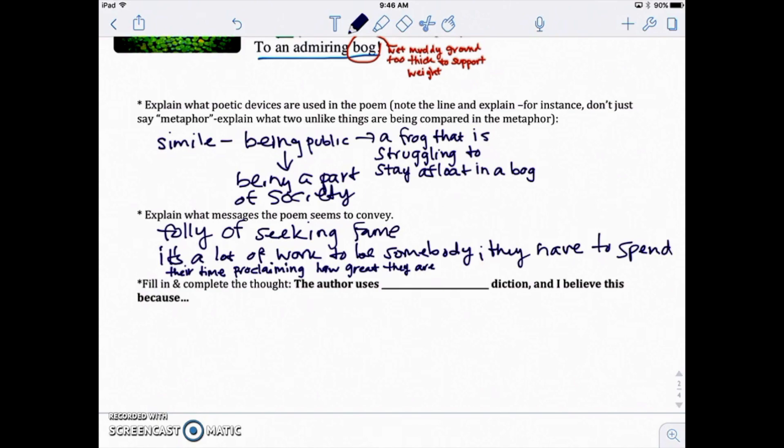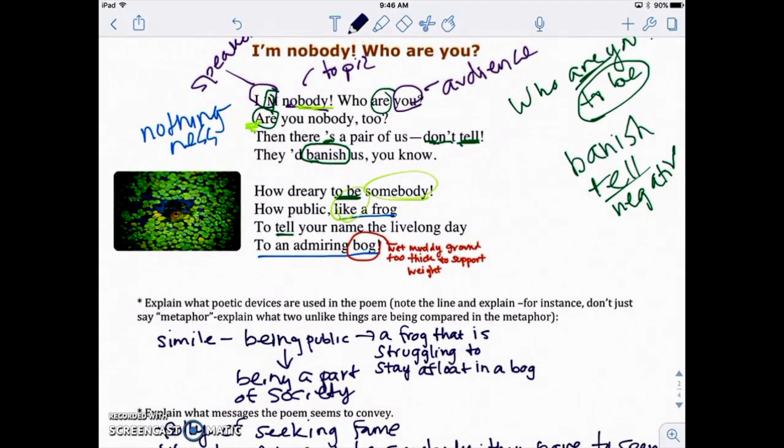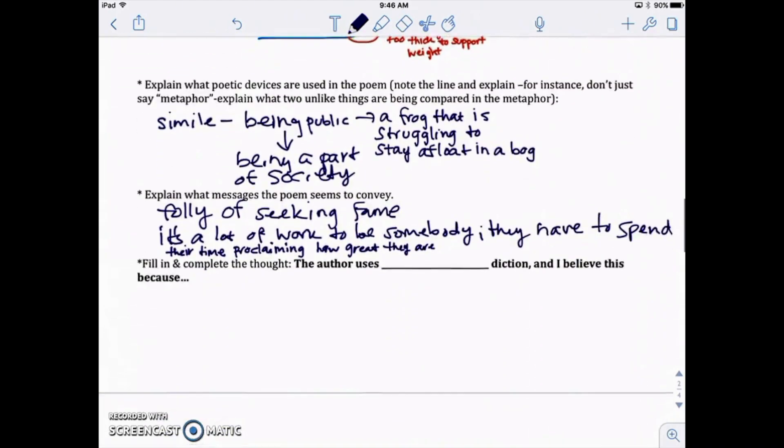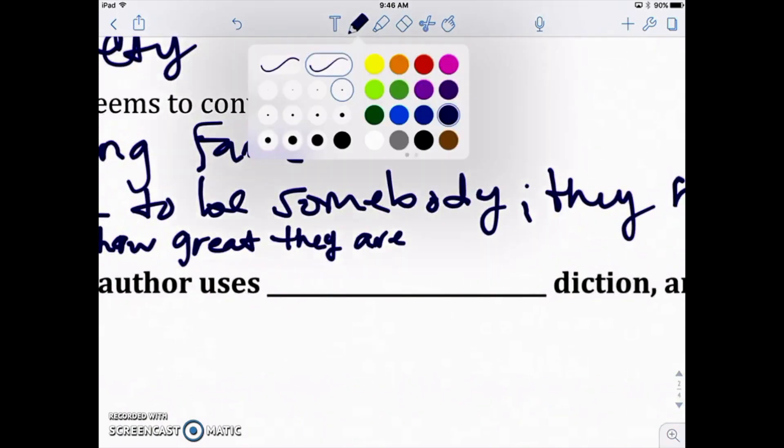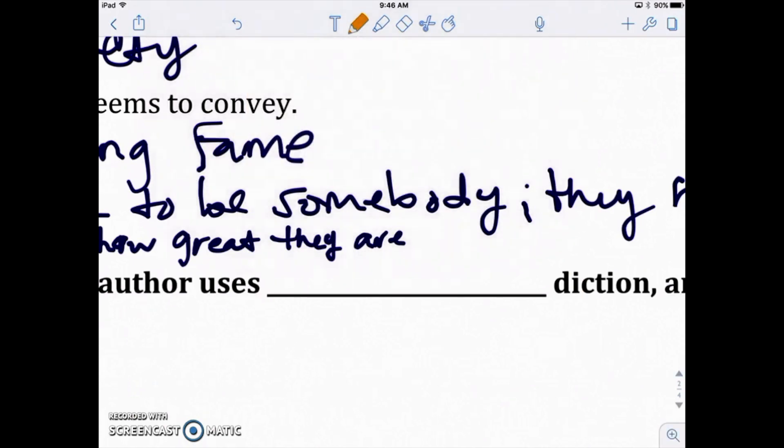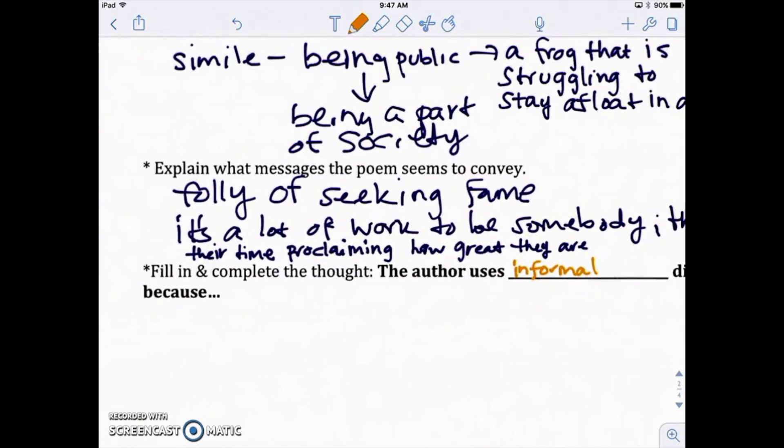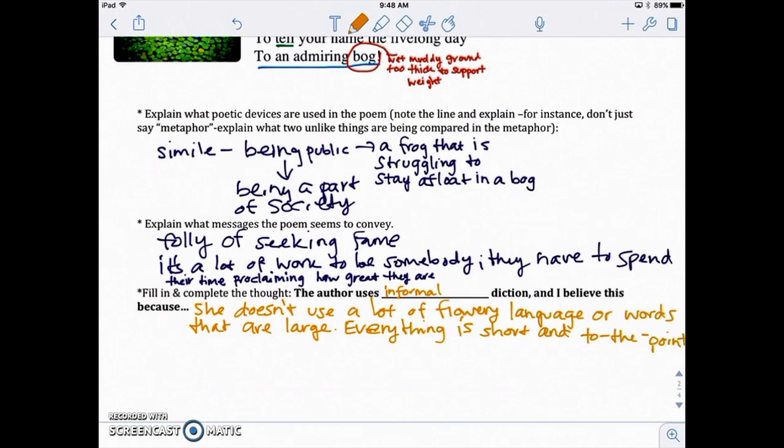So let's go back up and look at our word choice. And to be honest, in the 1800s, that would have been a word that most people knew. So are there any really fancy words in this? Okay. Maybe dreary is kind of a fancy word. I don't know if you consider that a fancy word, but for the most part, we've got really simple words here, right? Really simple words. So I am going to right here, I'm going to use it when it comes to diction. Emily Dickinson uses informal. You could also write to the point diction. And I believe this because, well, she doesn't use a lot of flowery language or words that are large. Everything is short and to the point.